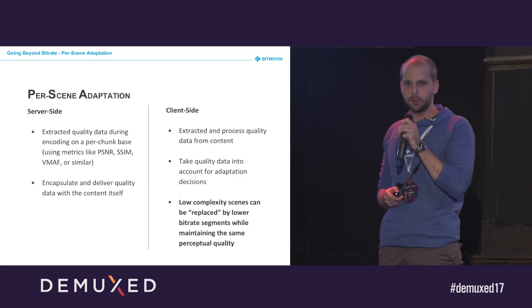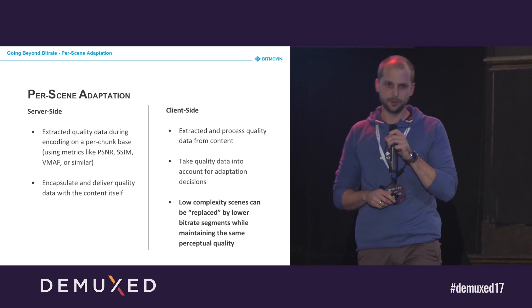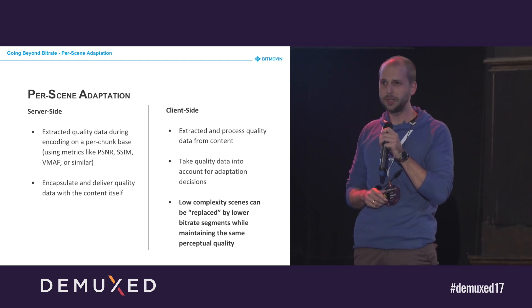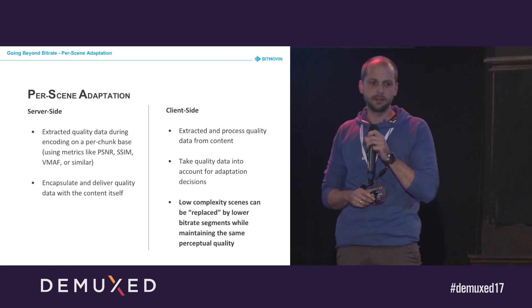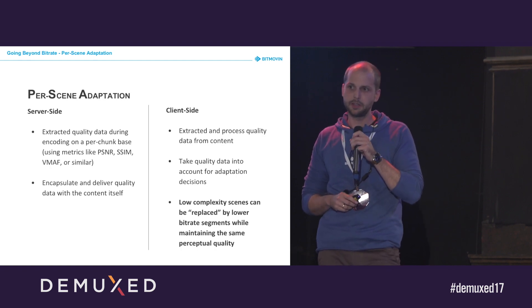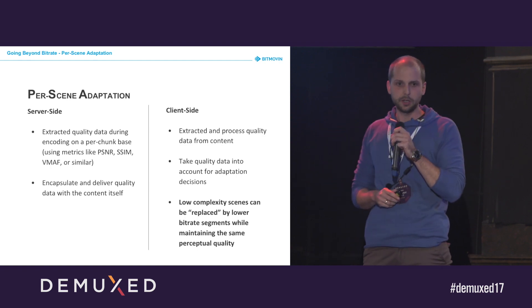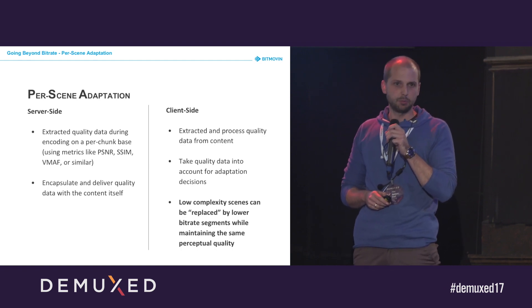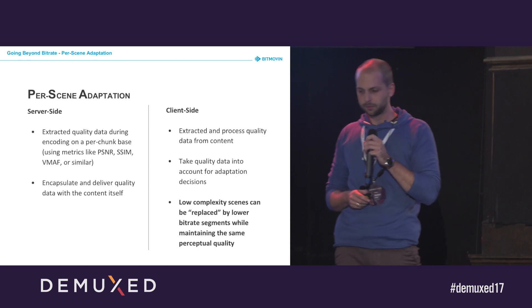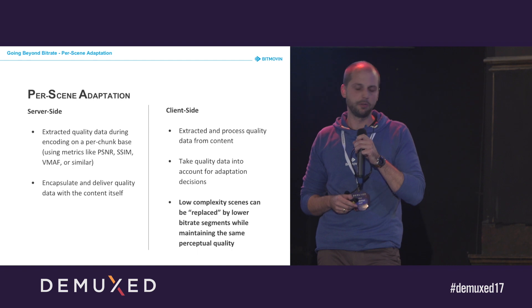So what needs to be done? First, on the server side: extract quality data during encoding on a per-chunk basis. You can use metrics like PSNR, SSIM, VMAF, or any other. We implement it using several different metrics and derive what we call a quality indicator. This quality indicator is then saved, encapsulated, and delivered with the content itself — via various methods such as including it in the container, the manifest or playlist, or even using sidecar files.